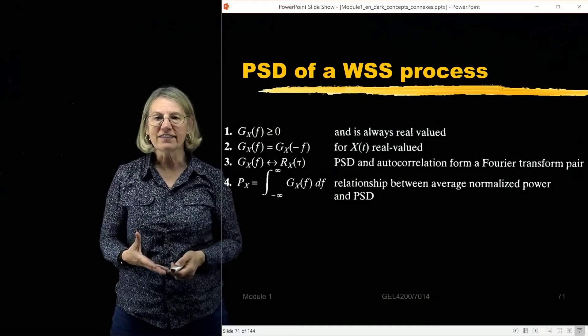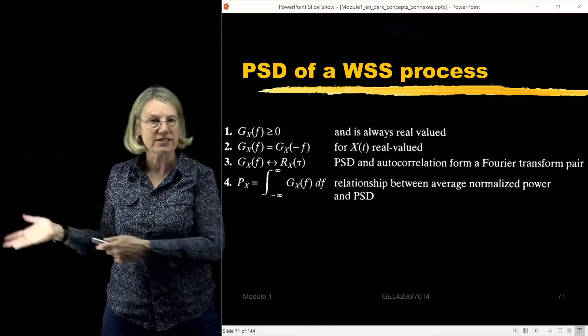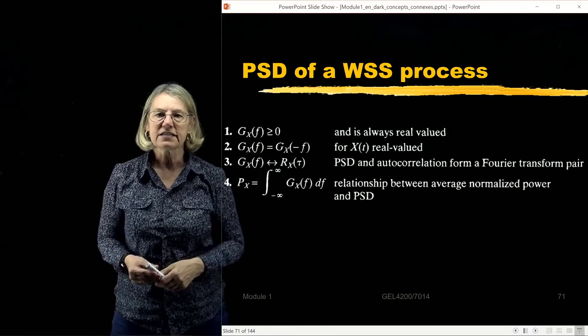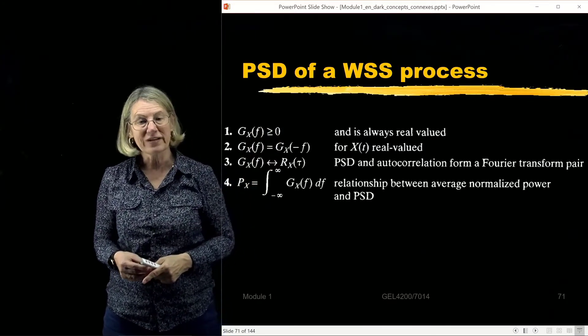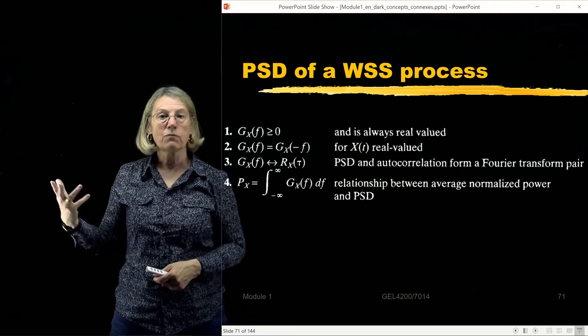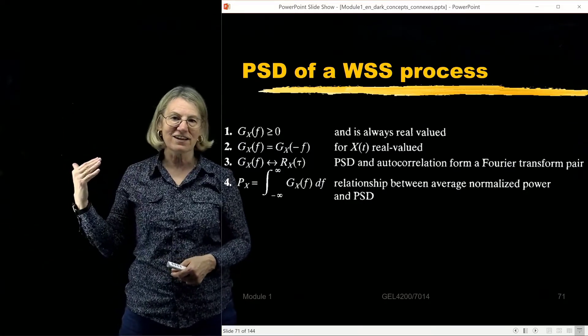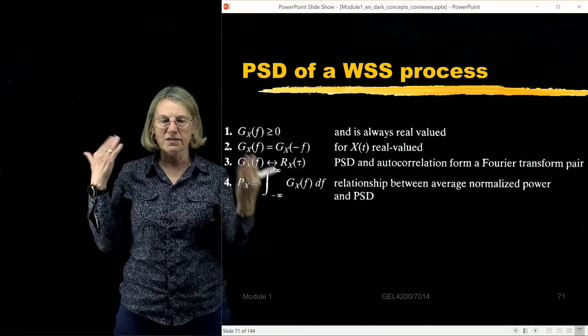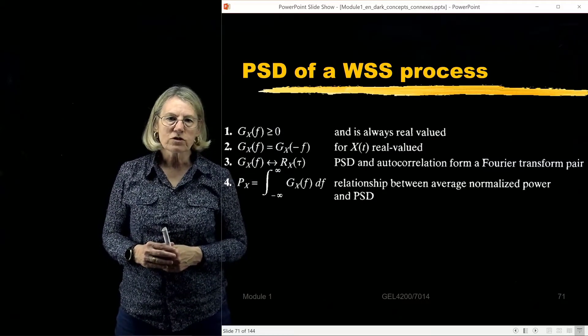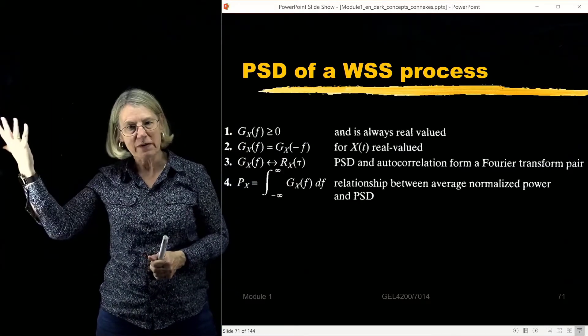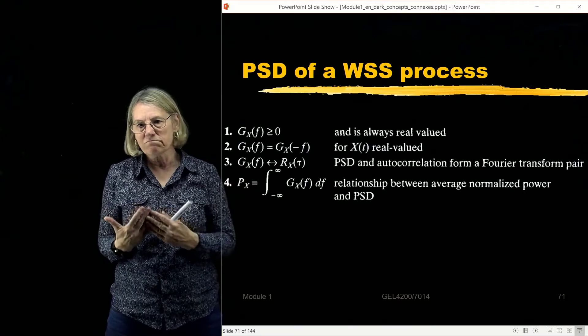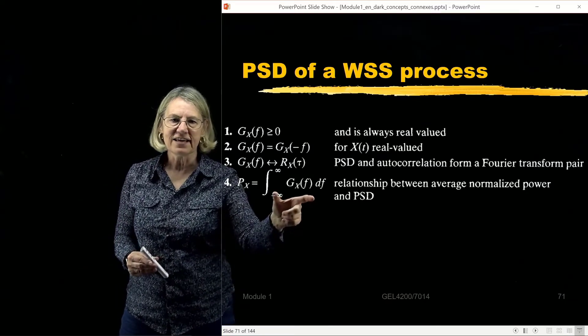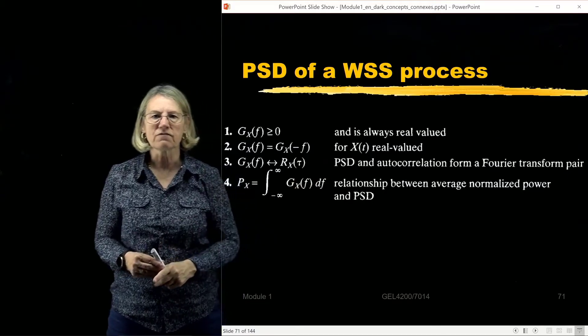So if we look particularly at this power spectral density, this function Gx(f), which is the Fourier transform of the autocorrelation function, what kind of properties does it have? From the definition, it's strictly positive. It is symmetric when X(t) is real valued. So if X(t) is a real function, which it is in our laboratory when we're dealing with communication signals, in this case just Fourier theory tells us that the power spectral density will be symmetric about the DC. Of course, we can always do the inverse Fourier transform to pass from the power spectral density to the autocorrelation function. And of course, you can also think about the average power as being defined as the area under the curve of the power spectral density.